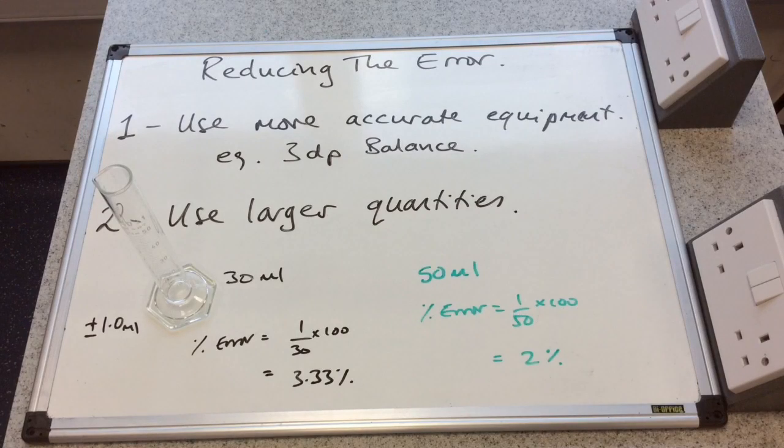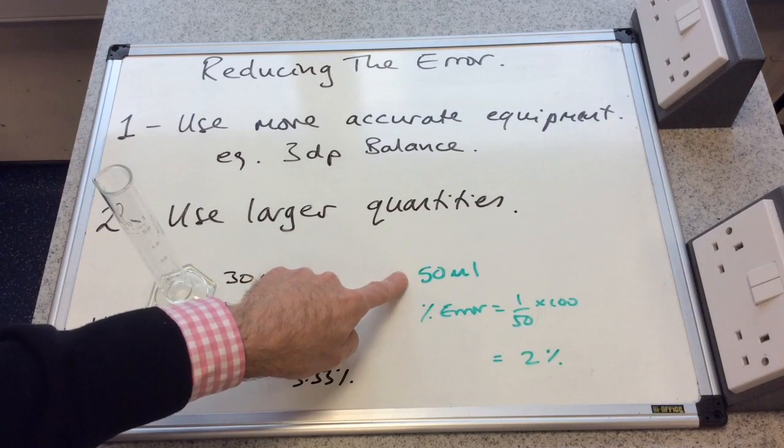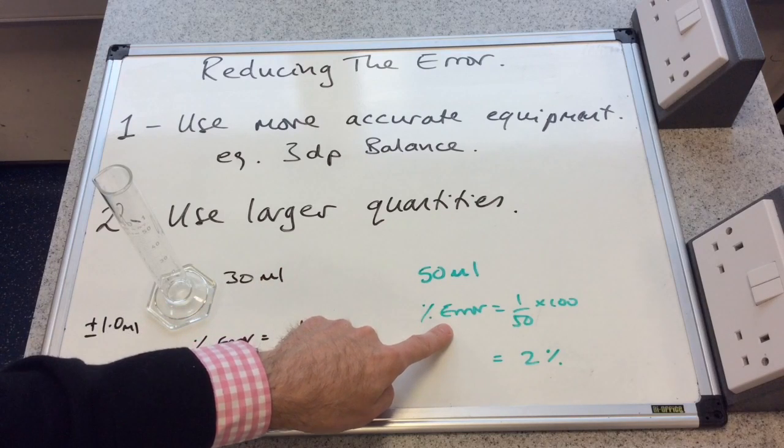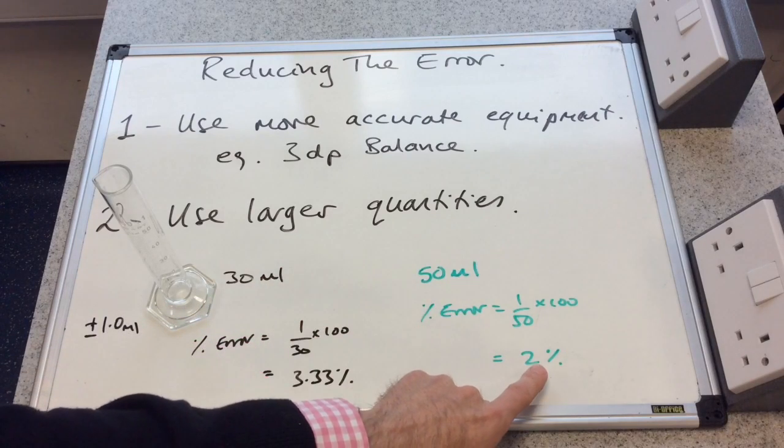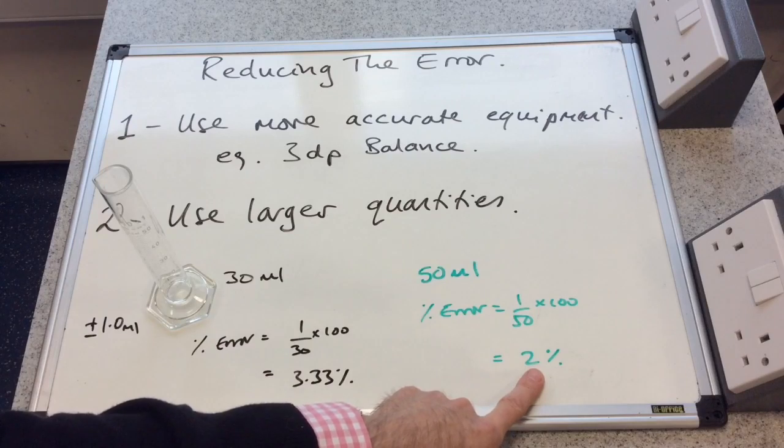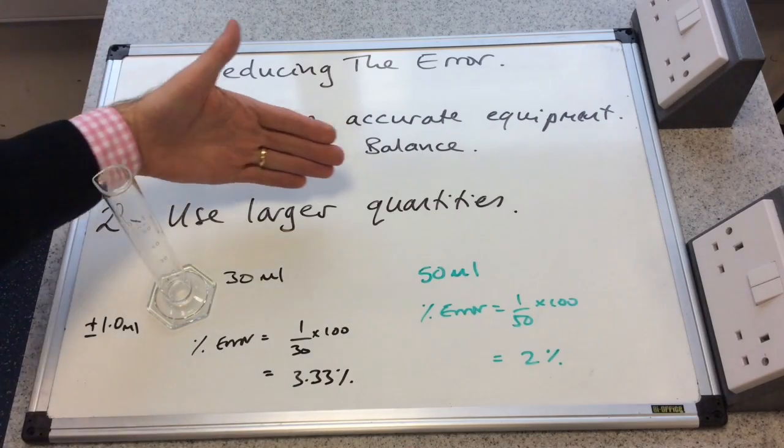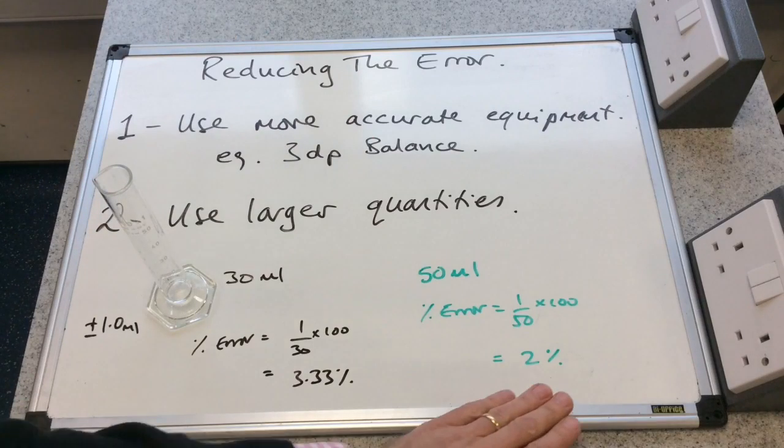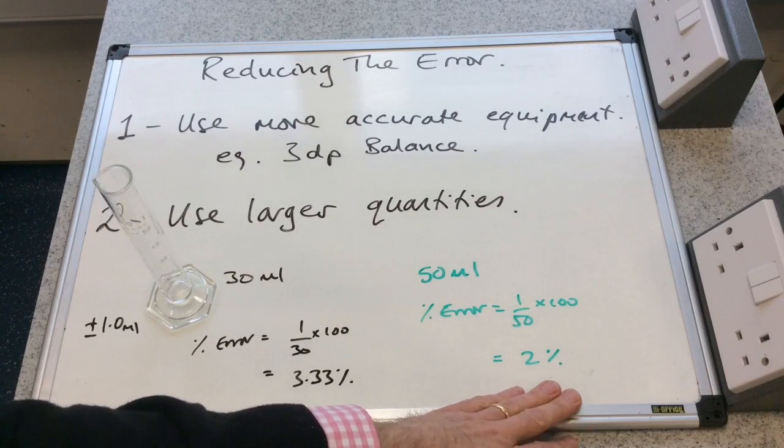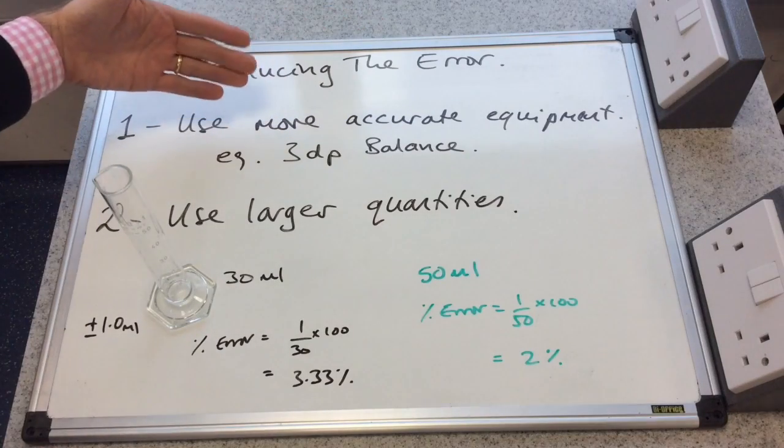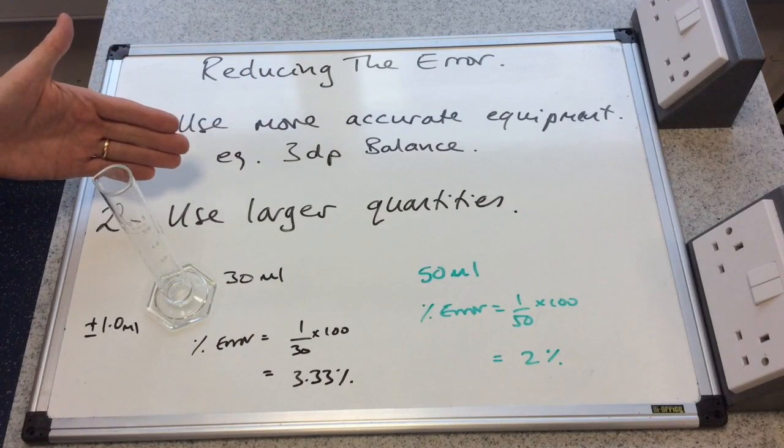And you can see in green, I've simply increased the volume to 50 milliliters, and when you put the numbers into the same formula, the error drops to 2%. So you can see that if you scale up your experiment, you use larger quantities, you actually reduce your errors. So if money's no object, you can use more accurate equipment. If not, use larger quantities.